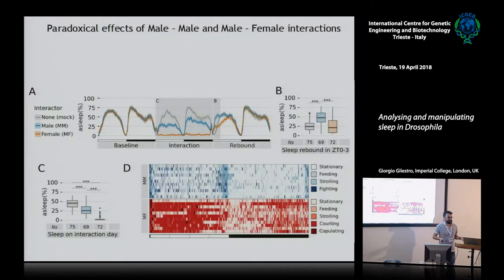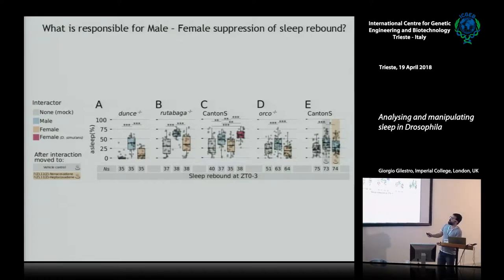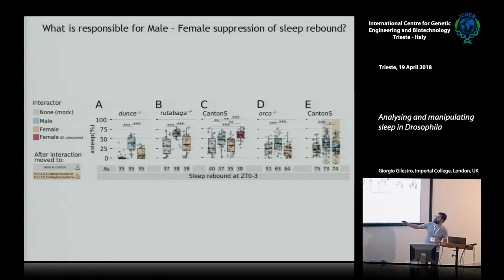So why doesn't this lead to a rebound? We started to investigate the possible causes and repeated experiments in different mutant backgrounds. Dunce and Rutabaga are very well-known memory mutants — flies that have problems remembering. We thought: maybe when you remove the female, these flies are in love and remember their previous encounter, and that's something they think about so they can't fall asleep. So we thought memory might be involved. We did experiments in dunce and rutabaga mutants, and the answer would appear to be: not really.